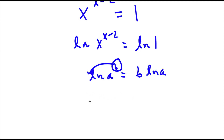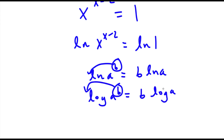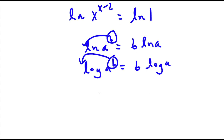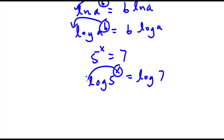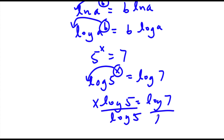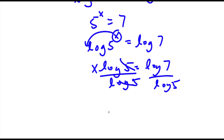The same goes for log: if I take the log of a to the power of b, I can move this exponent to the front, so this equals b times log a. This is useful — for example, if 5 to the power of x is equal to 7 and we're solving for x, we take the log on both sides, move the exponent x to the front, so x times log 5 equals log 7. Then divide both sides by log 5, and x equals log 7 over log 5.